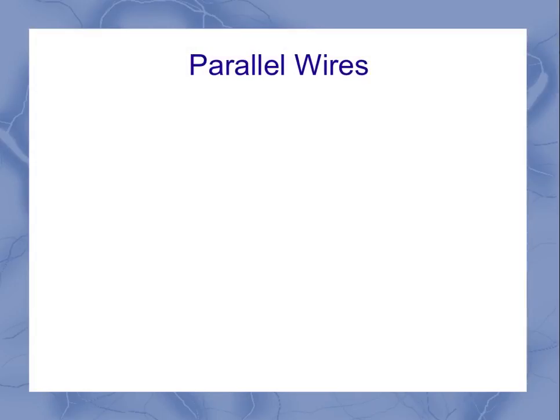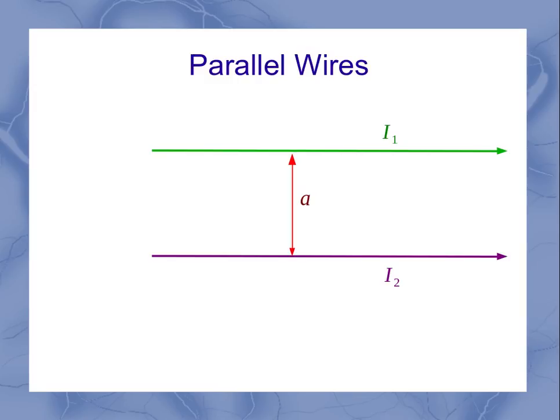So that brings us into our parallel wires case. Here I've got two parallel wires. In this case, they're both pointing in the same direction. But you could also have one of these two wires flipped around to the left. That would be just fine. For convenience, I'm going to label them I1 and I2 to represent the two different currents. And these two wires are separated by a distance A.